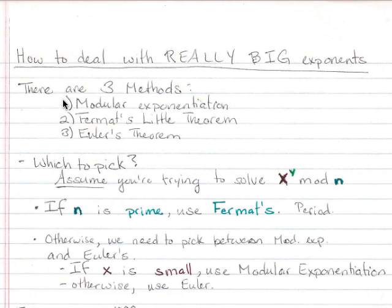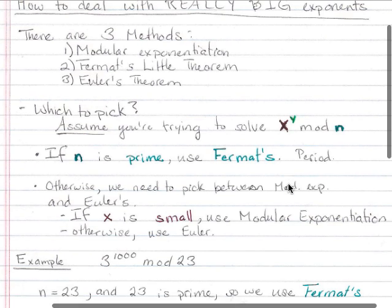You can learn how to do each of these three, but another key thing is to know which to pick. I'm going to start out with saying you're trying to solve something with this form: x to the power y mod n. If n is prime, if the modulus is prime, we want to use Fermat's.